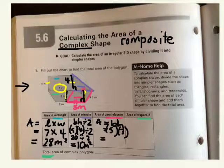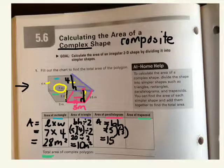Base times height, 5 times 3. 15 meters squared. So the area of the parallelogram is 15 meters squared.